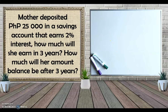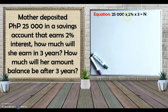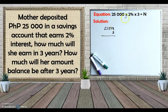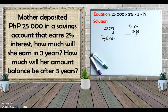Next: Mother deposited 25,000 pesos in a savings account that earns 2% interest. How much will she earn in three years, and how much will her amount balance be after three years? For the interest, we use the formula: 25,000 times 2% times 3 years. You can multiply 25,000 by 3 first to get 75,000, then multiply by 0.02 (the decimal of 2%). Counting the decimal places, the interest earned in three years is 1,500 pesos.